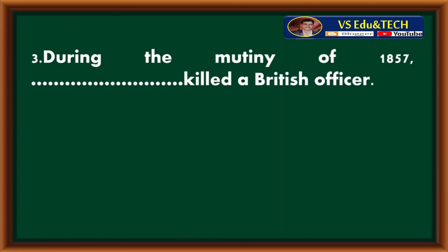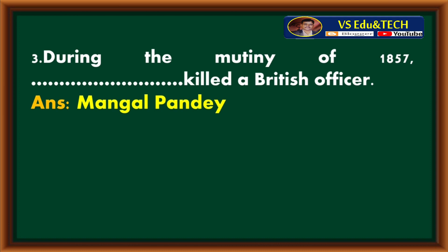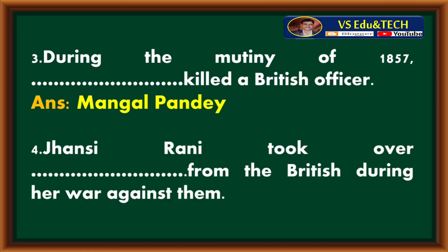During the Mutiny of 1857, blank killed a British officer. Answer: Mangal Pandey. Question No. 4 — Jhansi ki Rani took over blank from the British during her war against them. Answer: Gwalior.